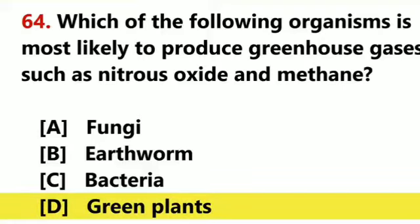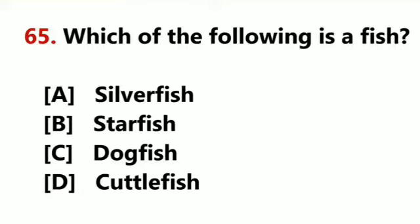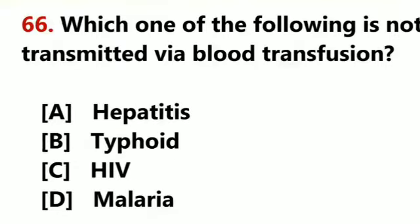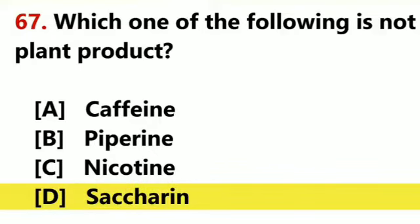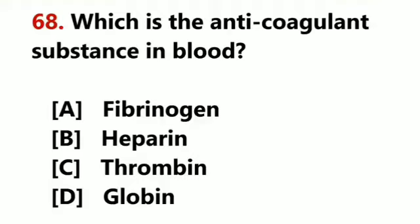Which of the following organisms is most likely to produce greenhouse gases such as nitrous oxide and methane? Green plants. Which of the following is a fish? Dogfish. Which one of the following is not transmitted via blood transfusion? Typhoid. Which one of the following is not a plant product? Saccharin. Which is the anti-coagulant substance in blood? Heparin.